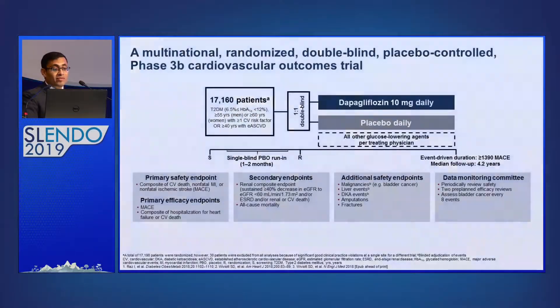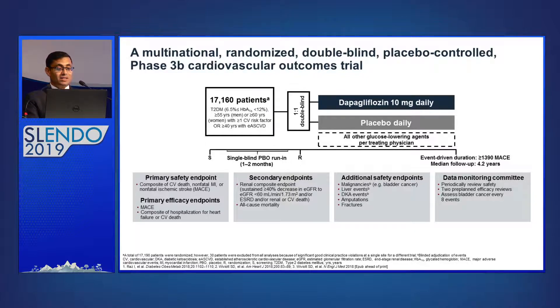India and probably some centers from Sri Lanka were also part of the DECLARE trial, and our institute participated as well. This is the defining cardiovascular outcome trial in type 2 diabetes, designed per FDA requirements. They included 17,000 patients with HbA1c more than 6.5%, age more than 55 years. Importantly, around 40 percent of these patients had cardiovascular risk factors, and they used a 1:1 double-blind design — either the dapagliflozin arm or the placebo arm.